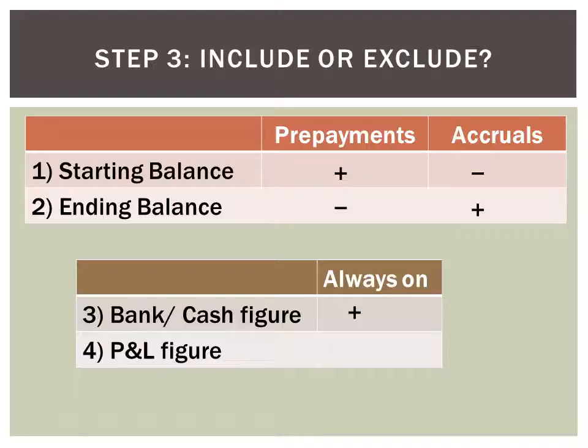The P&L figure is always on the negative side. At the end of the year we must always transfer the balances in the expenses account and the income account into the profit and loss account in the income statement. We take them out by subtracting — we have been accumulating all these expenses throughout the year, and then we take out what is for the year and put it in the income statement. So it is always on the negative side.